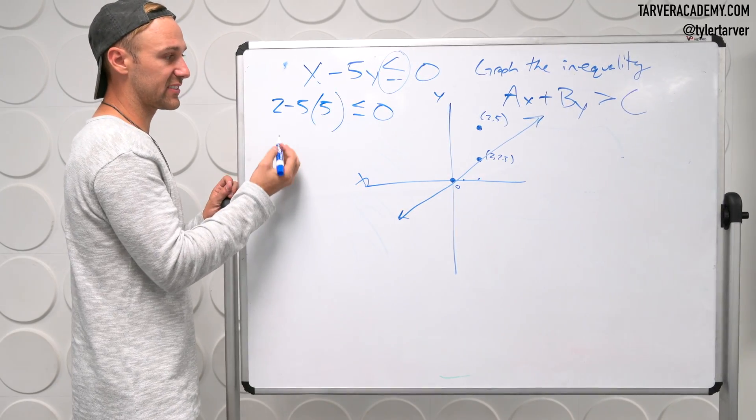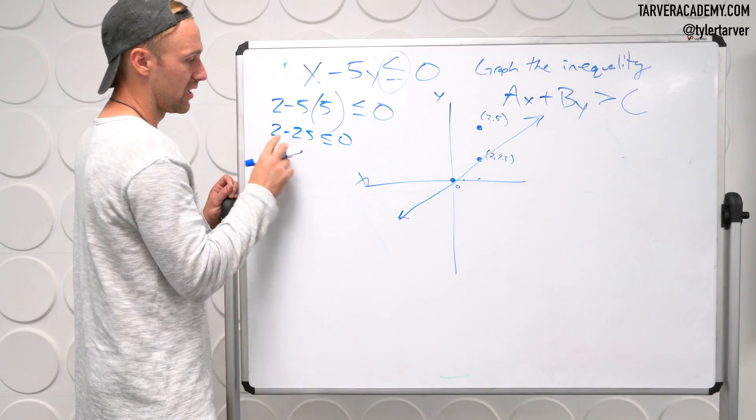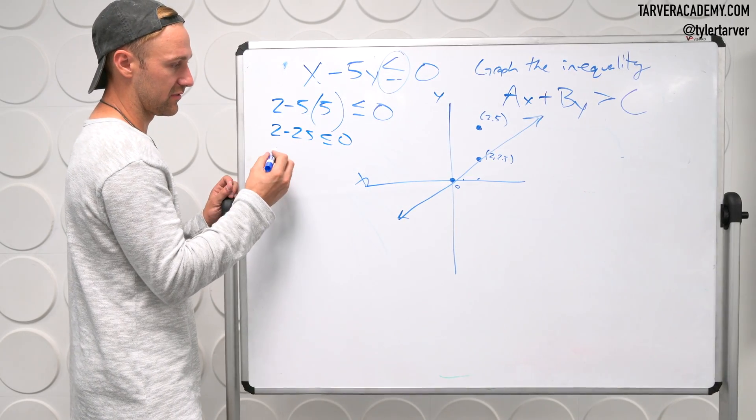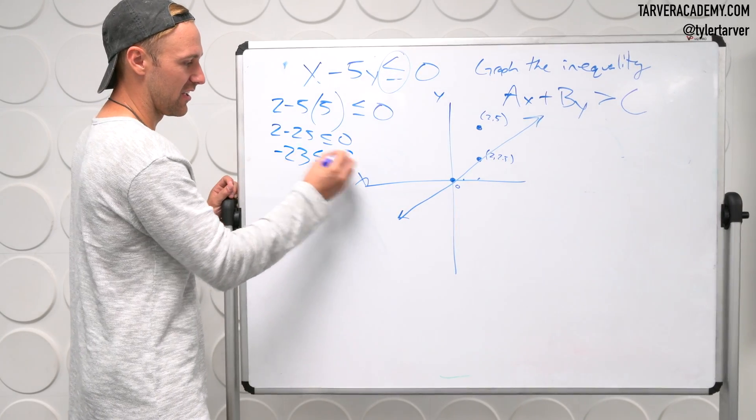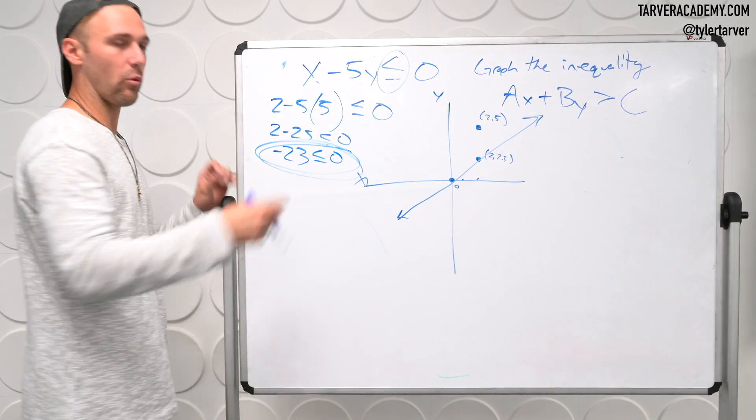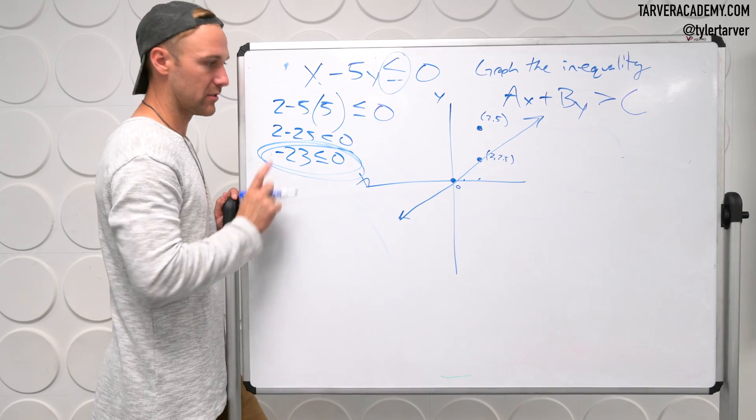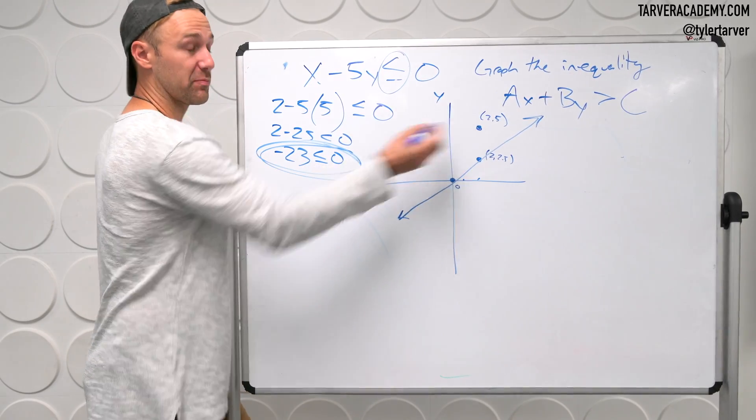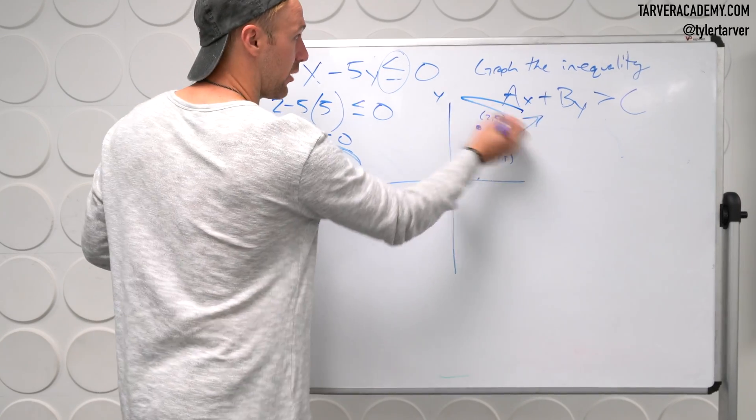Negative 5 times 5 is? 2 minus 25. What's 2 minus 25? Negative 23. Does that work? Is that correct? Is that a correct statement? Yes. Therefore, would this point be allowed to fit into this equation? Yes. Therefore, we shade where that point is.